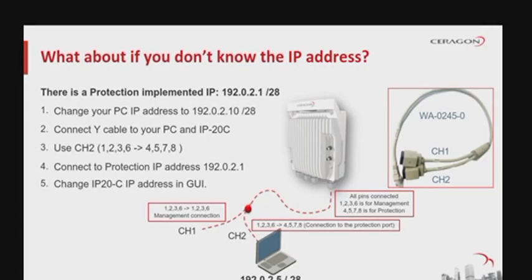There are scenarios where the client does not know or has lost the IP of the element. It's rare, but it can happen. There is a protection IP implemented in each unit: 192.0.2.1, which can be accessed using a specific Y-splitter cable designed for this. The Y-splitter cable has one end that goes into the IP20C and two connections available — channel 1 and channel 2. Channel 1 is used for the normal connection. Channel 2 is used with a cross-connected cable for accessing the protection IP 192.0.2.1. To access this IP, you need to change your computer's IP to something in the same subnet as 192.0.2.128.